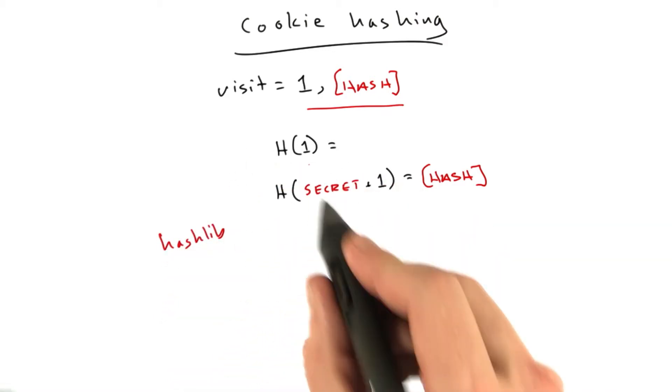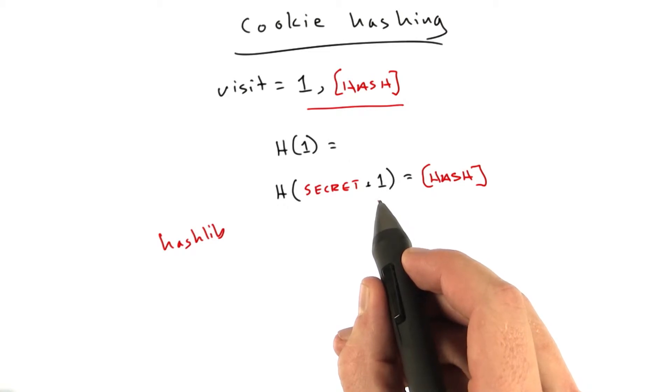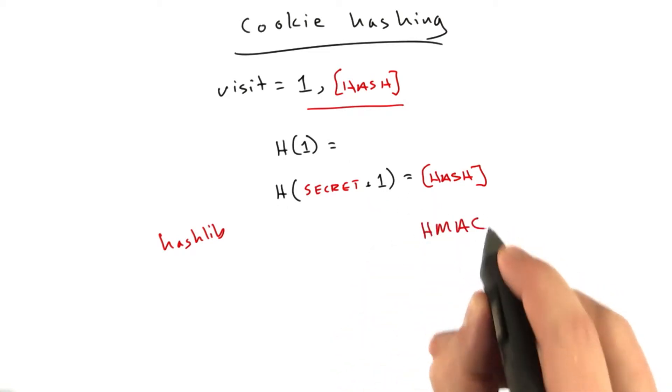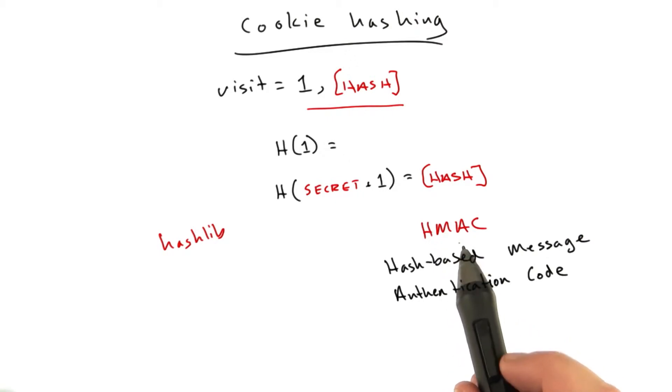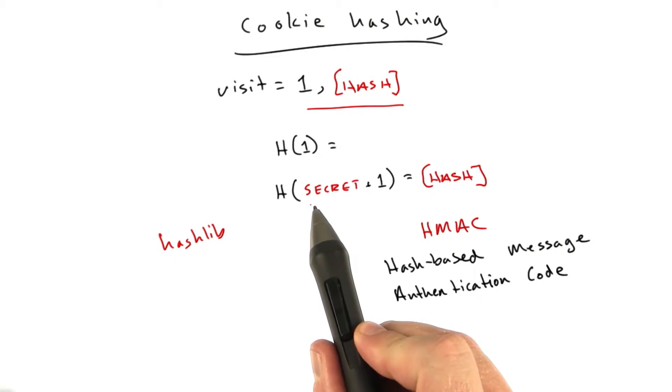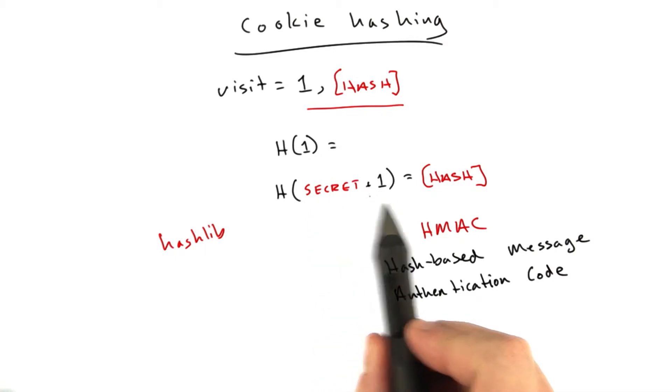So, we've been using Hashlib to run basic hashes. There's a second library specifically for doing message authentication called HMAC, Hash-Based Message Authentication Code. This is basically a special algorithm built in Python for when you want to combine a key with your value to create a hash.